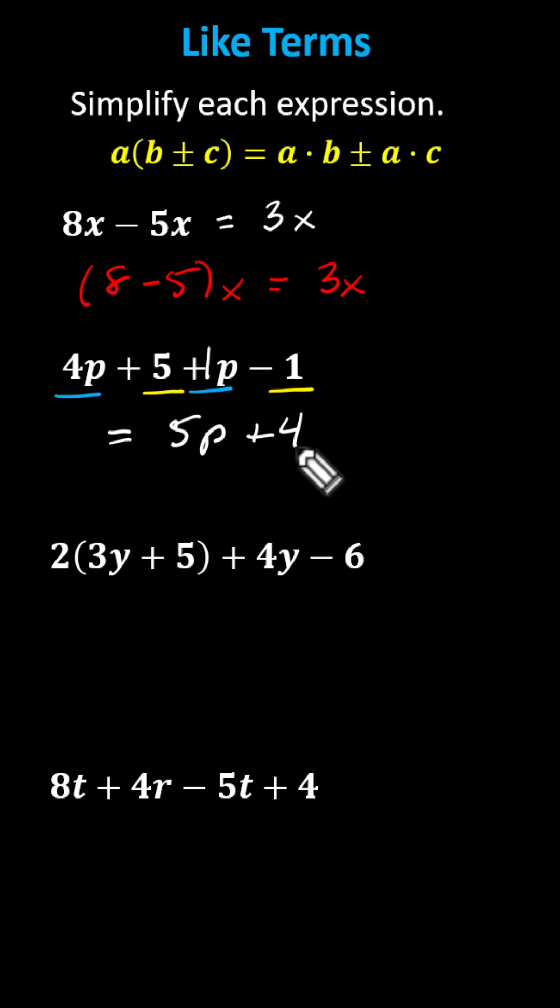The given expression simplifies to 5p plus 4. For the next expression, we need to eliminate the parentheses by distributing the 2 before combining like terms. Distributing the 2, we have 2 times 3y, which is 6y, plus 2 times 5, which is 10, and we still have plus 4y minus 6.